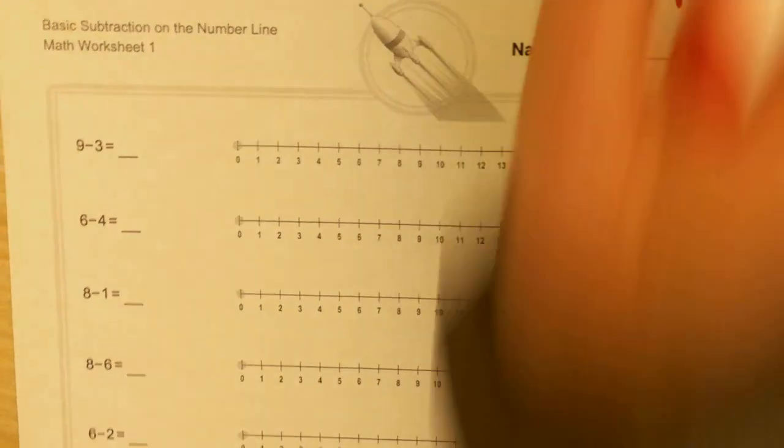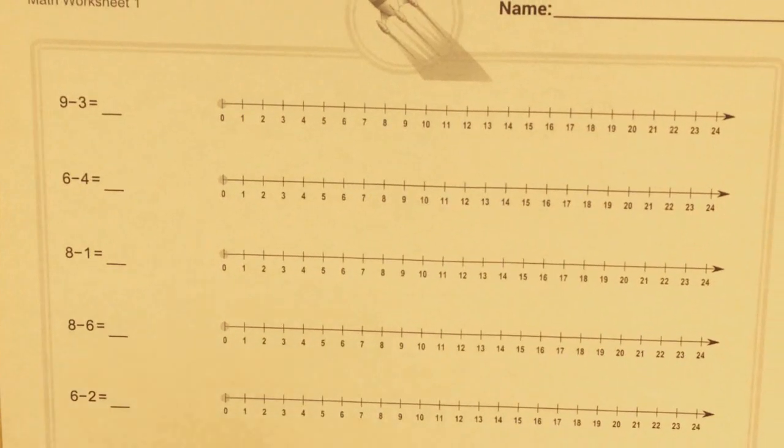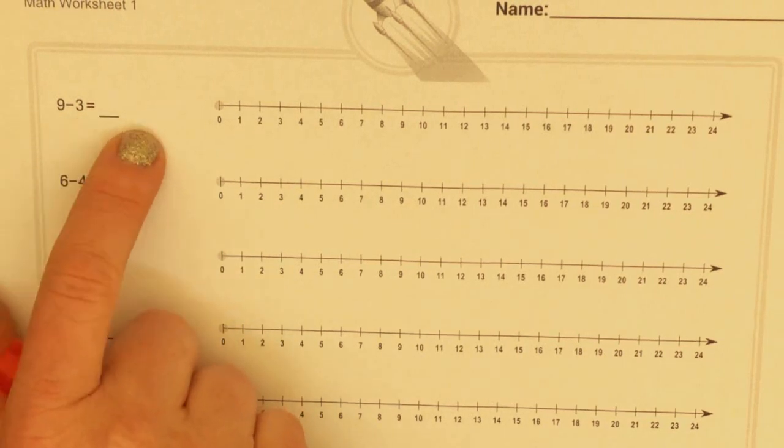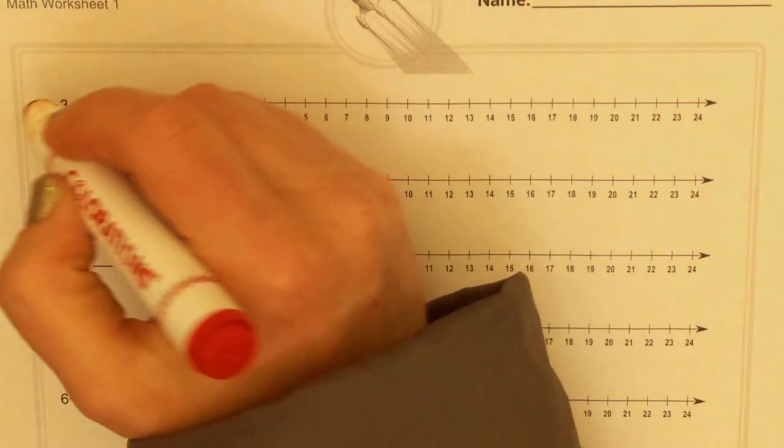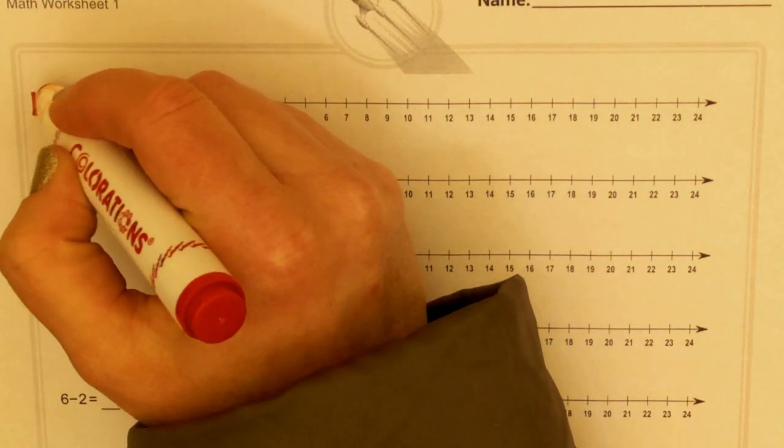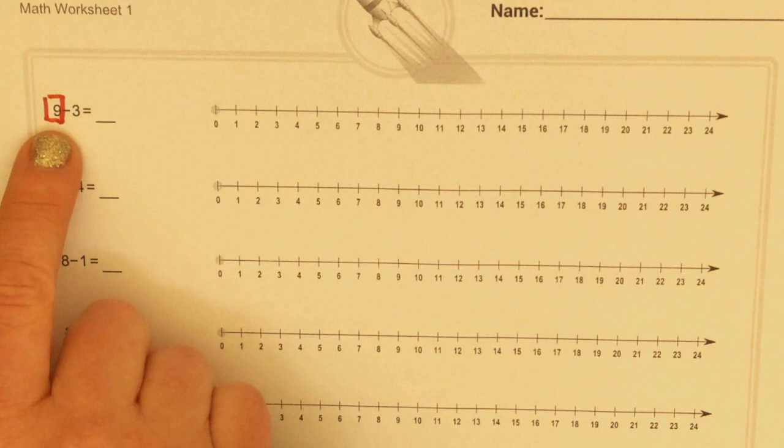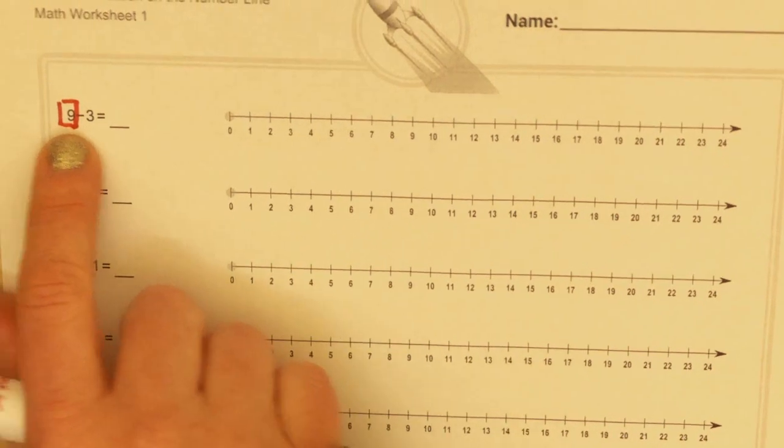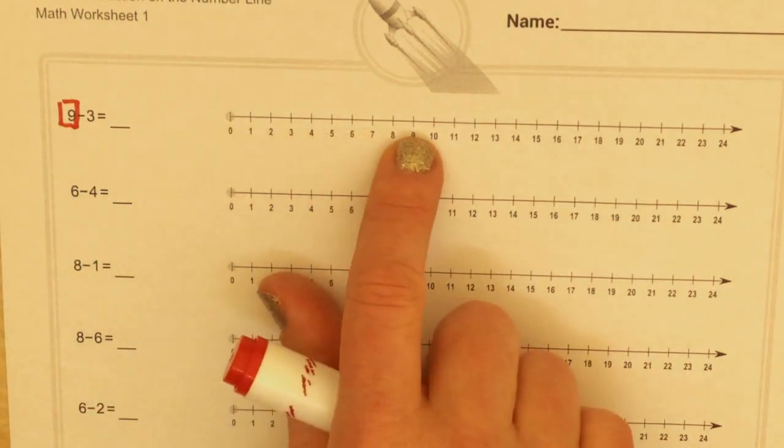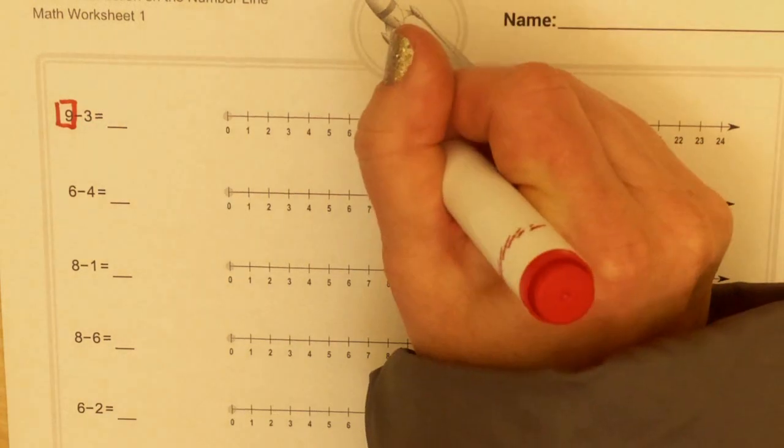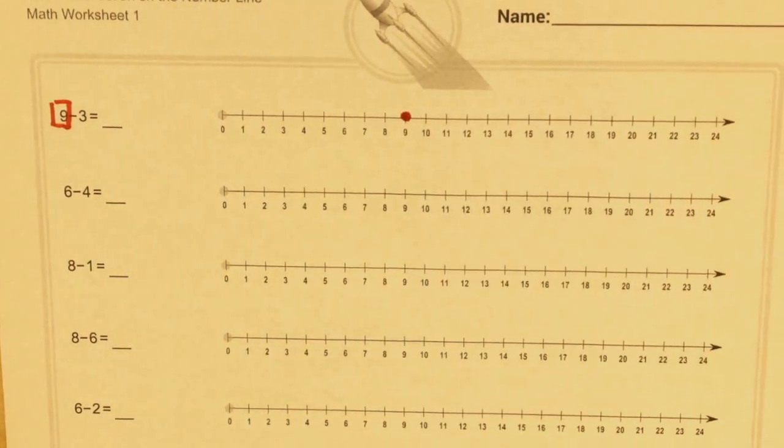Let me zoom in. Alright, so let's look at the equation 9 minus 3 equals something. This first digit right here, that greater number, is my start number. So here I have a start number of 9. I'm going to go to my number line, I'm going to find the number 9, and I'm going to draw a dot just above my start number 9.